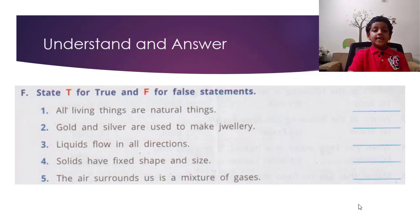F. State T for true and F for false statements. All living things are natural things - true. Gold and silver are used to make jewelry - true. Liquids flow in all directions - false. Solids have fixed shape and size - true. The air surrounds us is a mixture of gases - true.